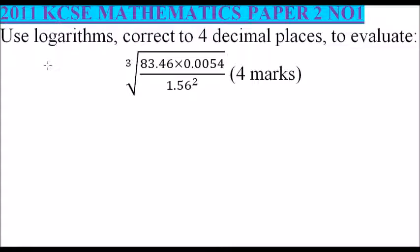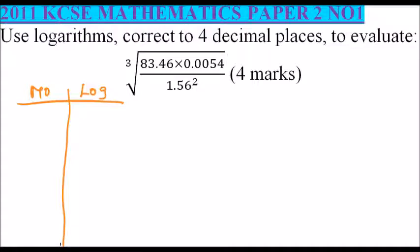To do this, it is good that we use a table. We draw a table where we write the number and the logarithm of the number. The first thing we do is get the logarithm of 83.46 using our logarithm tables — we get the logarithm of 8.346.